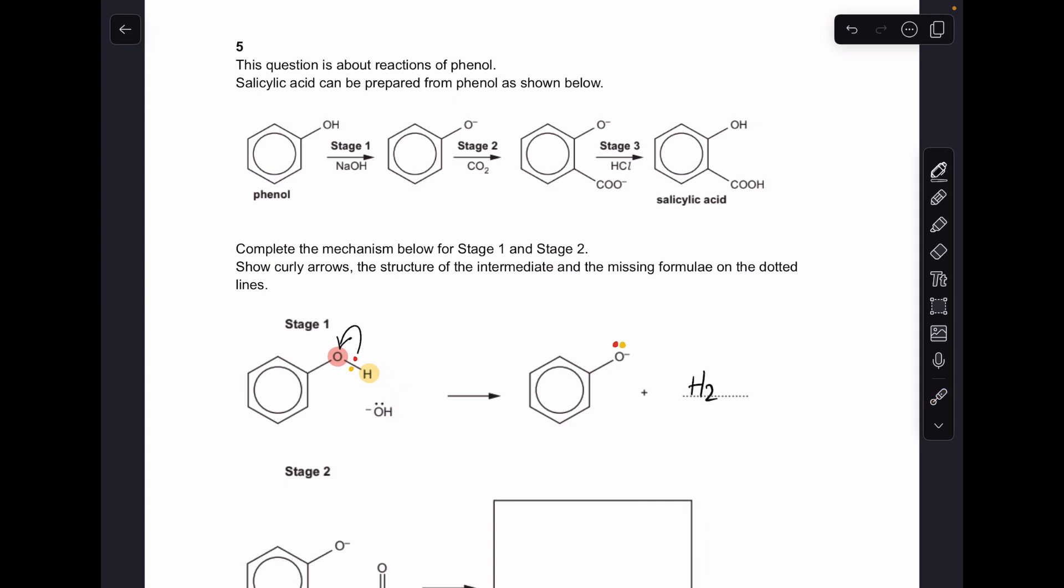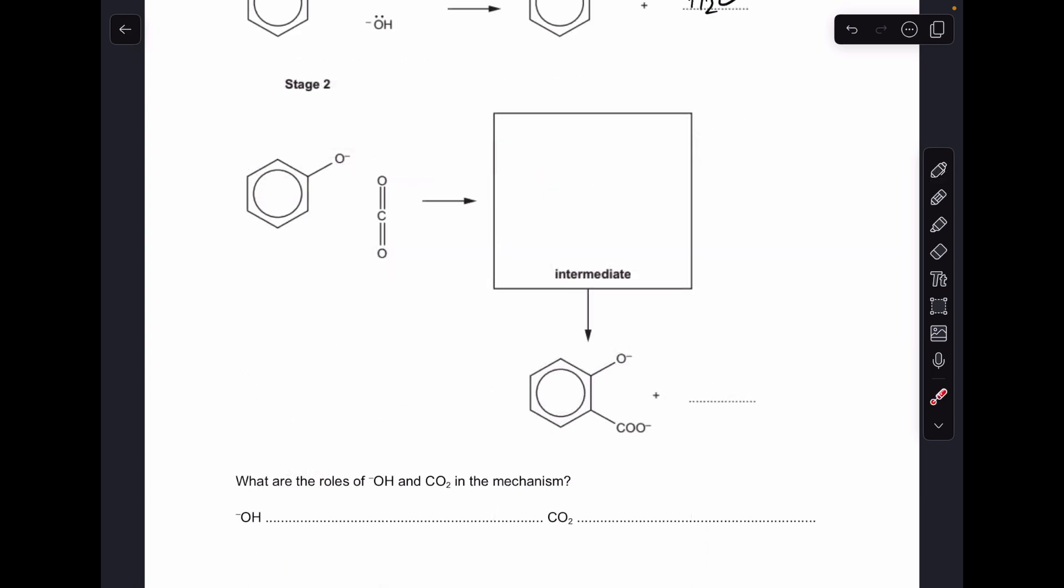Moving on to stage two, looking for any obvious changes. You can see we've got a COO minus group on this carbon of the benzene ring at position two, whereas we've just got a hydrogen there. For a covalent bond to join those two carbon atoms together, we've got to get a pair of electrons from the delocalized ring of pi electrons onto that carbon.